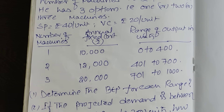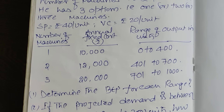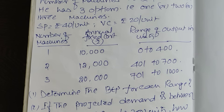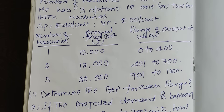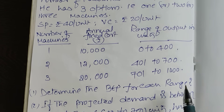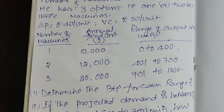When he decides to purchase two machines, fixed cost comes to Rs.12,000 and he can satisfy up to 700 units demand. When he decides to purchase three machines, fixed cost is Rs.20,000 and a maximum of 1,000 units demand can be satisfied.